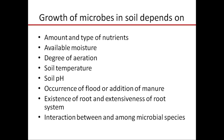Growth of microbes in soil depends on many factors. Microbes need certain conditions to grow: the amount of nutrients present in the soil — if nutrients are scarce, microbes will die; available moisture — microbes need moisture to grow; degree of aeration and oxygen, because aerobic microbes need oxygen to grow. If a soil is waterlogged, there is no soil air, so aerobic microbes will be affected and anaerobic microbes will grow. Degree of aeration determines which kind of microbes will be there in the soil.